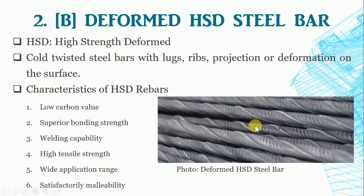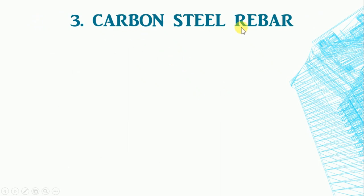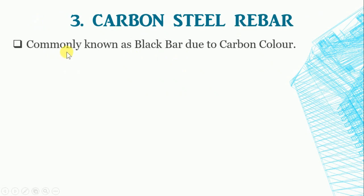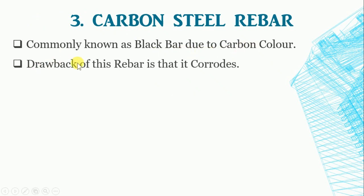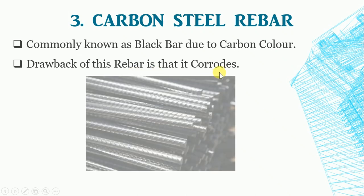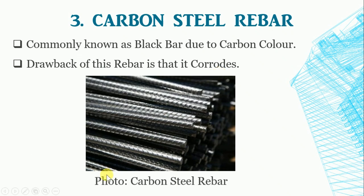Carbon Steel Rebar: As the name represents, it is made up of carbon steel and is commonly known as black bar due to the carbon color. The main drawback of these rebars is corrosion, which adversely affects the concrete and the structure. However, the tensile strength ratio coupled with the values makes black bar one of the best choices.